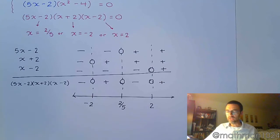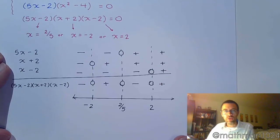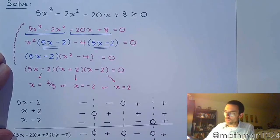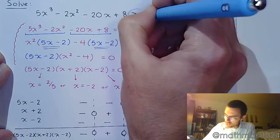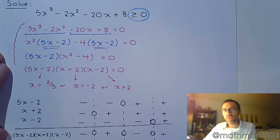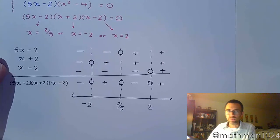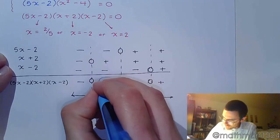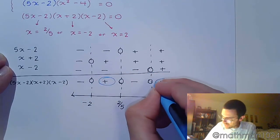Alright, so let's go back and look at our original inequality to see what it says. For the original inequality, we're looking for where we are greater than or equal to 0. So being greater than or equal to 0 means where are you positive or equal to 0.